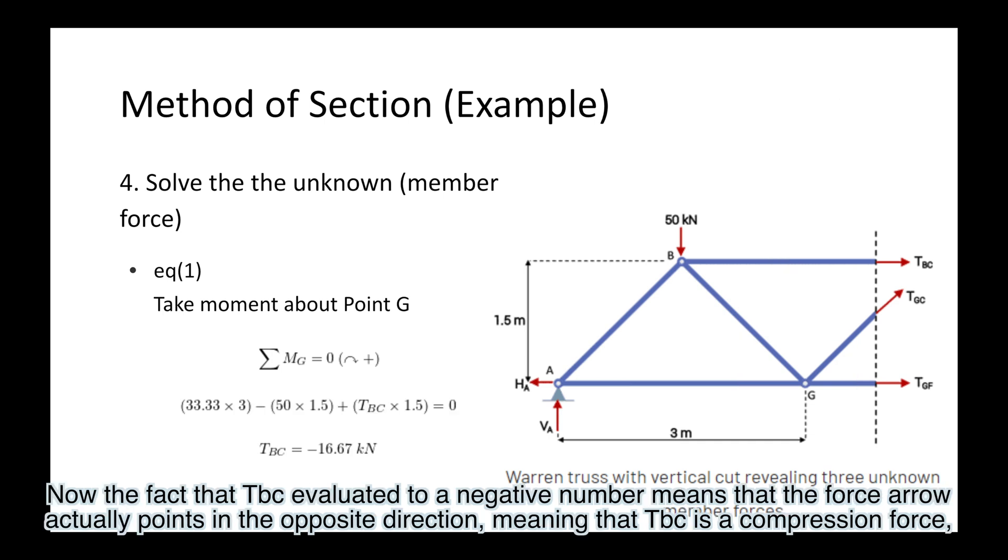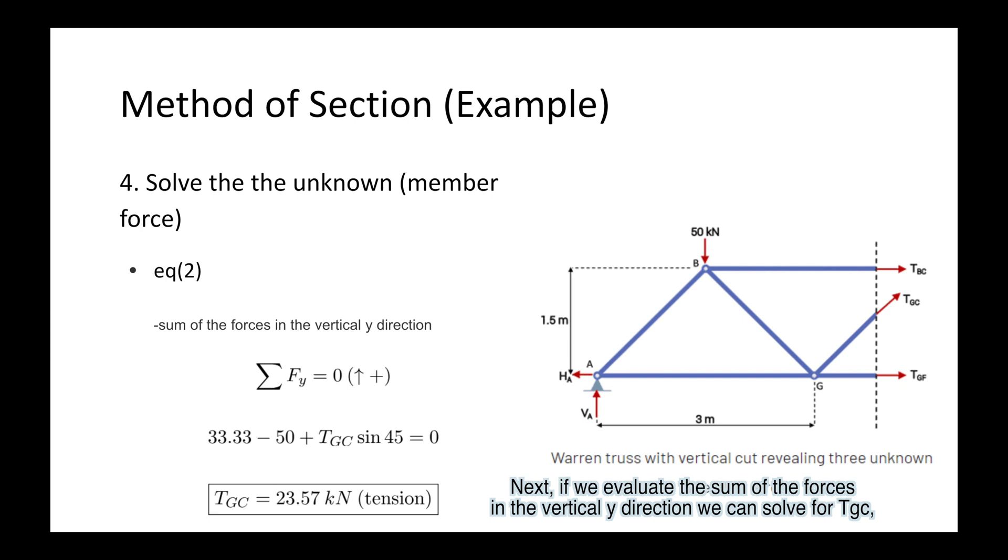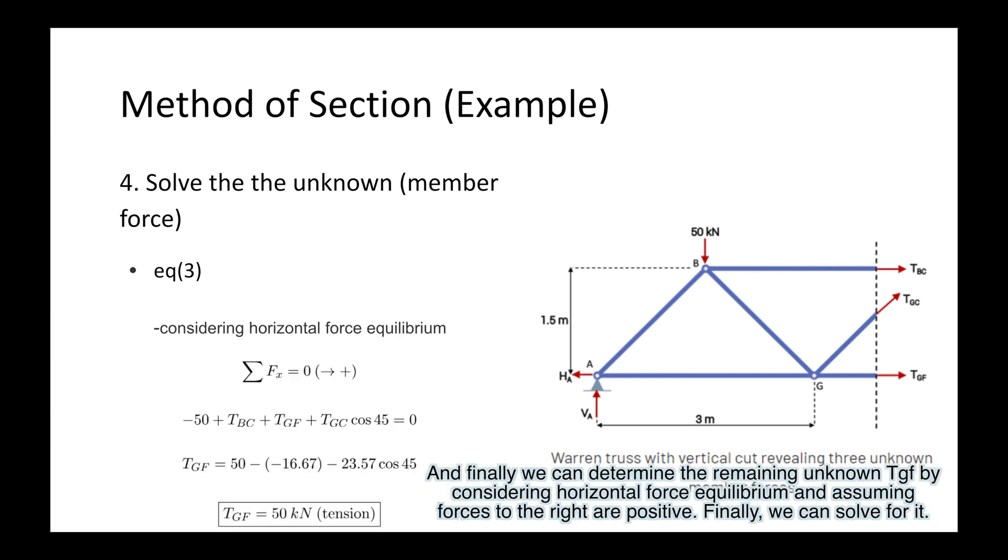Now the fact that TBC evaluated to a negative number means that the force arrow actually points in the opposite direction, meaning that TBC is a compression force. Next, if we evaluate the sum of the forces in the vertical Y direction, we can solve for TGC. And finally, we can determine the remaining unknown TGF by considering horizontal force equilibrium and assuming forces to the right are positive.